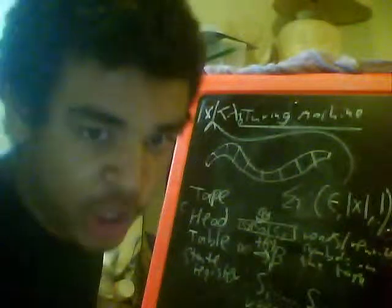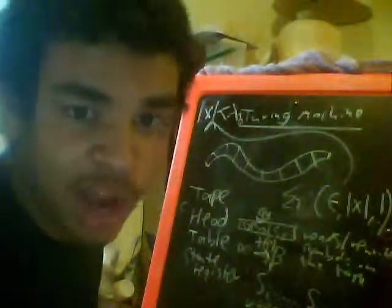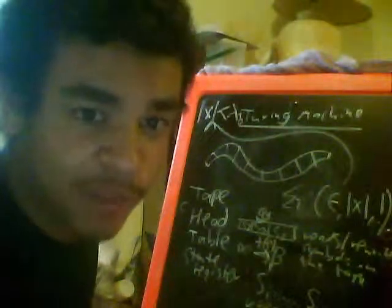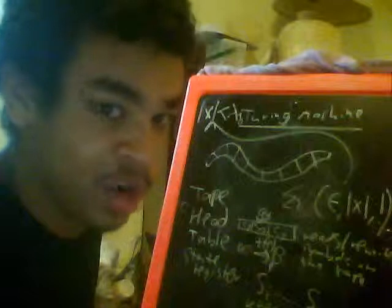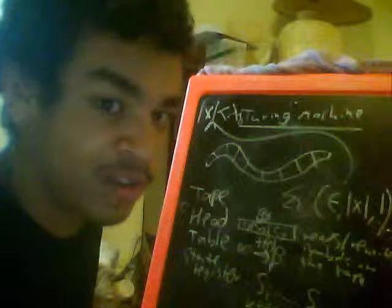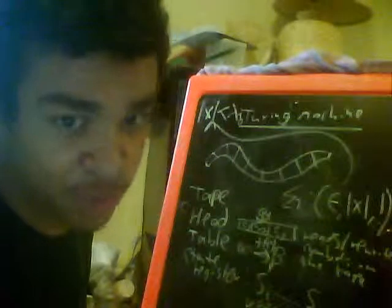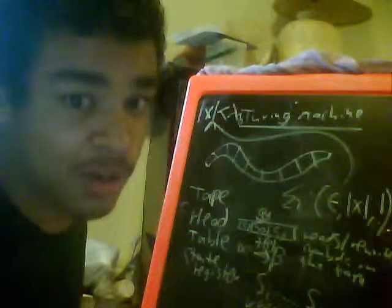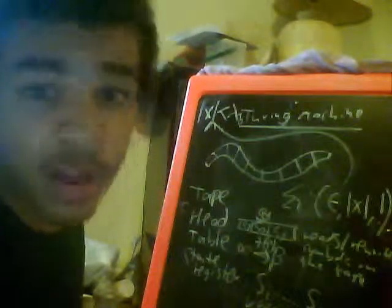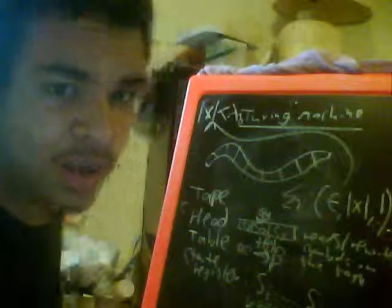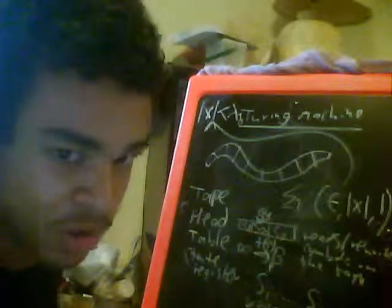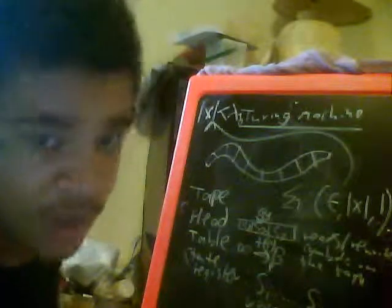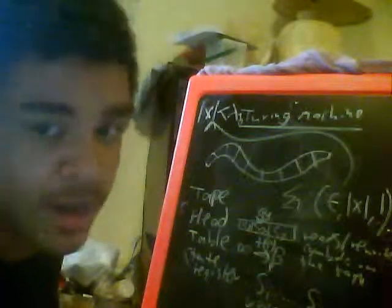This video will be discussing the Turing machine. If you remember Alan Turing, a guy who laid the foundation for computer science and cryptanalysis — it was actually a mathematical model. It's like a thought experiment on computers, how they would exactly operate.